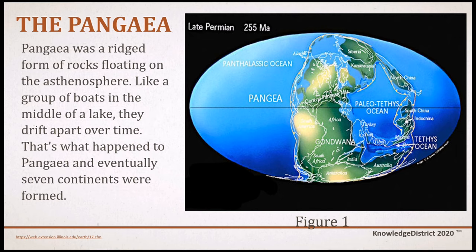Pangea was a rigid form of rocks floating on the asthenosphere. Like a group of boats in the middle of a lake, they drift apart over time. That's what happened to Pangea, and eventually seven continents were formed.